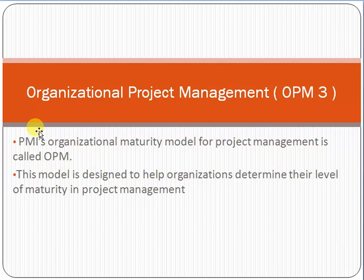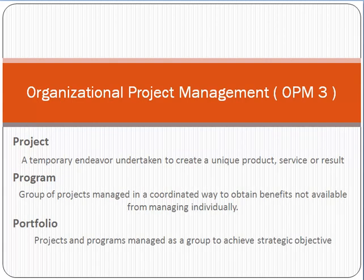OPM3, or Organizational Project Management, as per the definition of PMI, is basically a maturity model for project management. This model is designed to help organizations determine their level of maturity in project management. That is the basic definition as defined by PMI.